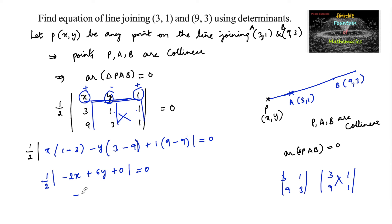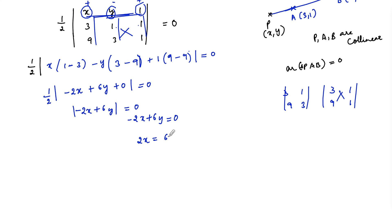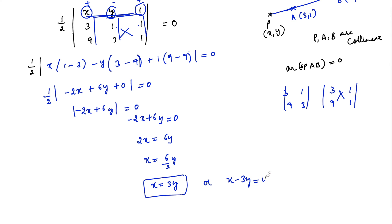So we can write −2x + 6y = 0, which gives 2x = 6y. Therefore, the equation of the line joining the two points is x = 3y, or equivalently x − 3y = 0.